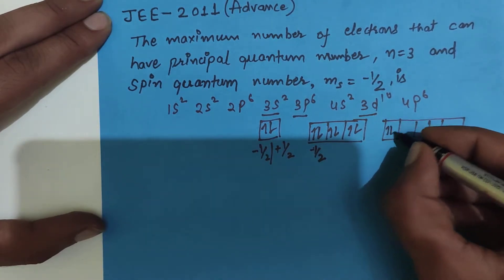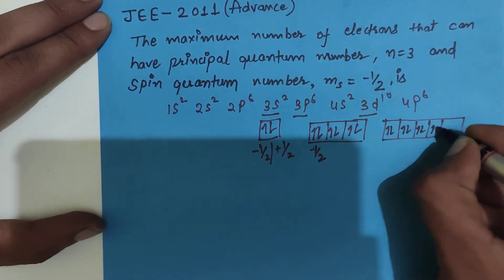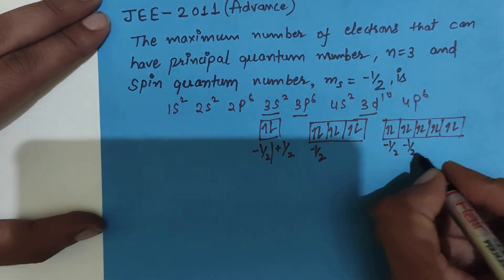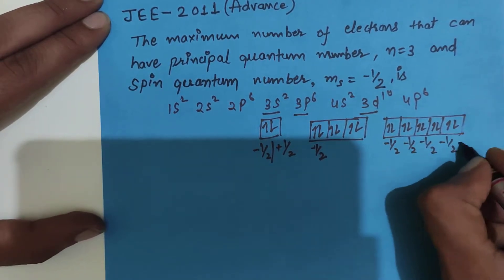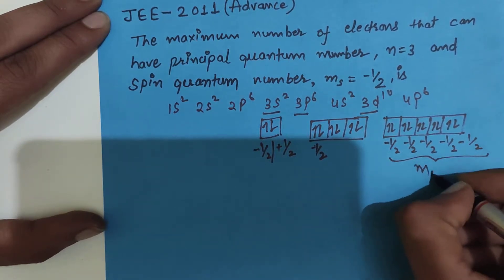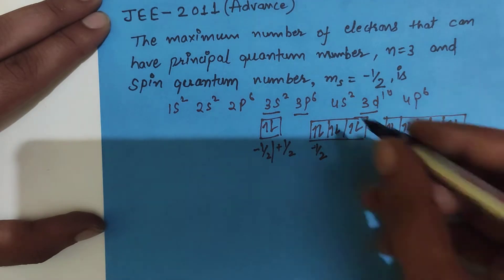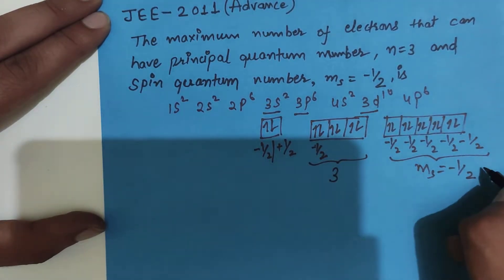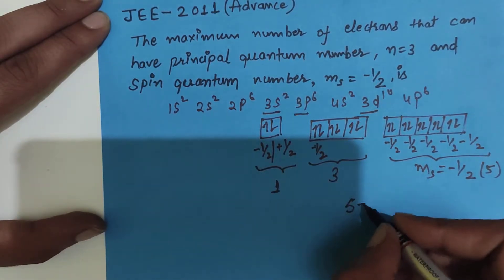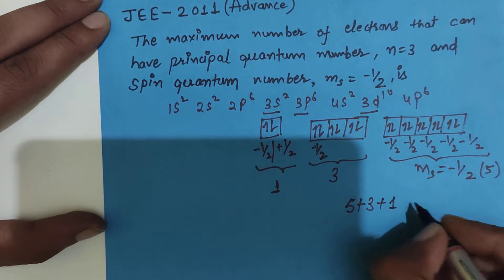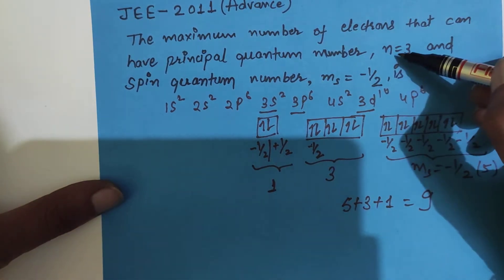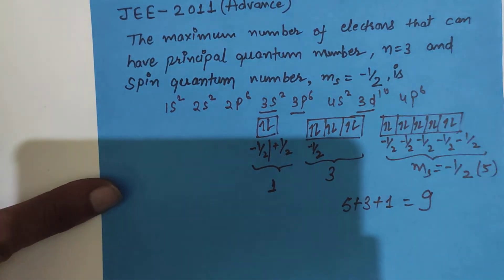For the D subshell, there are 5 orbitals and each orbital can hold 2 electrons. So every orbital will have one electron with spin quantum number minus 1 by 2, giving 5 electrons from the 3d subshell. For the P subshell, there will be 3 electrons, and from the S subshell, 1 electron. Total electrons will be 5 plus 3 plus 1 equals 9. So there are 9 electrons for which the principal quantum number is 3 and spin quantum number is minus 1 by 2.